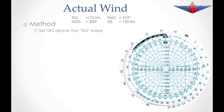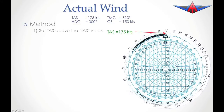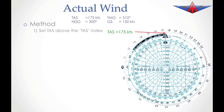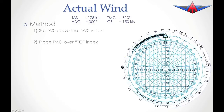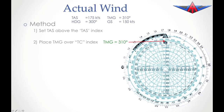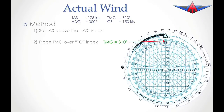Our first step is to set the TAS above the TAS index. Our TAS is 175 knots, so we'll rotate the wheel around to put that at the top. Our next step is to put our track made good on the inner circle, so we're going to rotate and put our track made good of 310 degrees above the TC mark. So now we've set our track made good and our TAS.